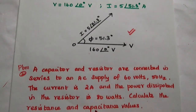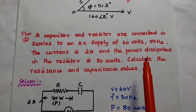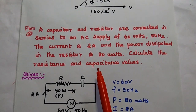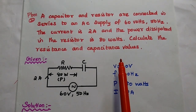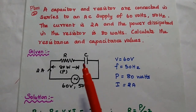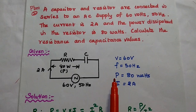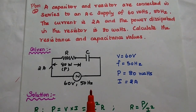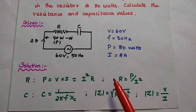Next problem: a capacitor and resistor are connected in series to an AC supply of 60 volts, 50 hertz. The current is 2 ampere and the power dissipated in the resistor is 80 watts. Calculate the resistance and capacitance values. This is a very important problem.